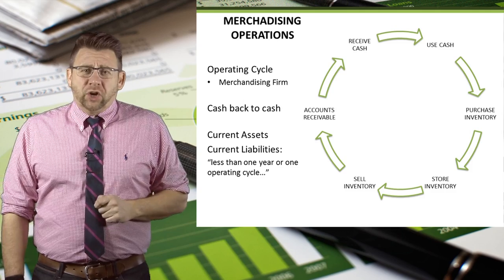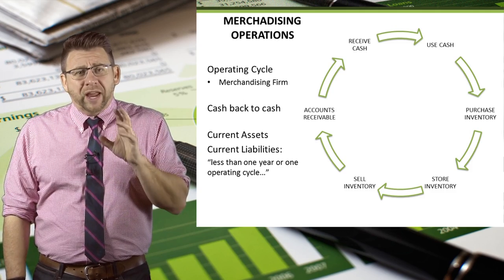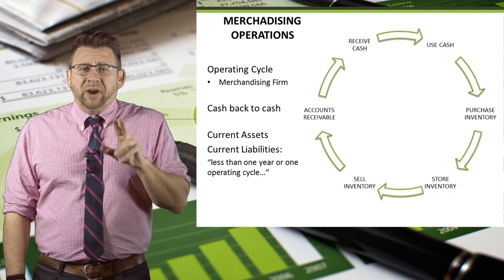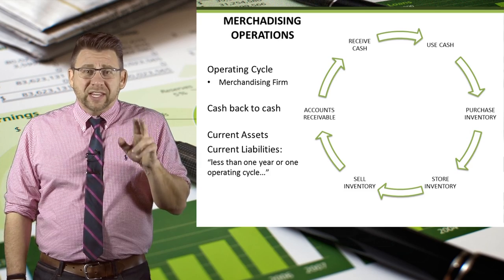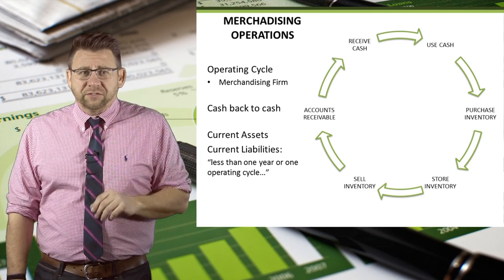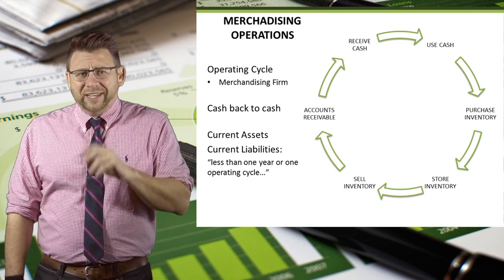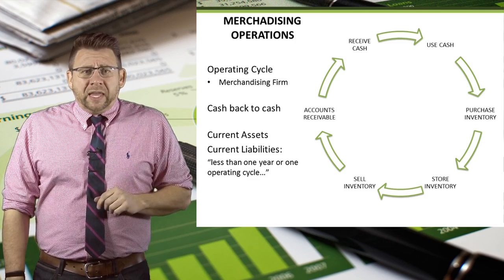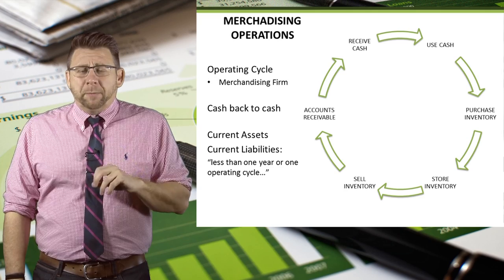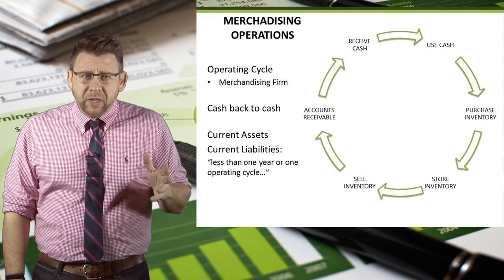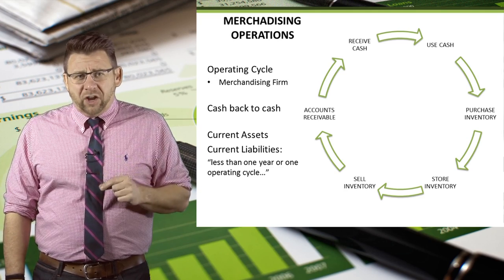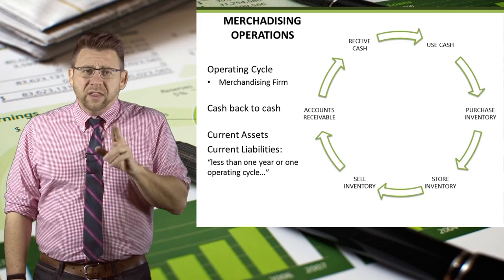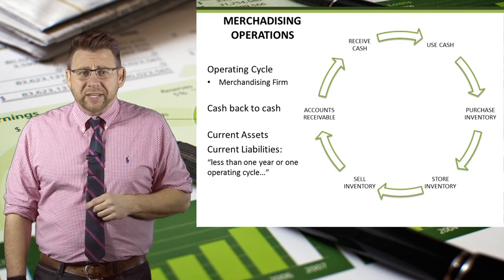This slide shows the operating cycle for a merchandising firm. Although the operating cycle for a merchandiser is usually longer than a service firm, it still usually isn't more than one year. These firms use cash primarily in the purchase of inventory, and then when they collect the accounts receivable incurred from the sale of inventory, they've completed the operating cycle.